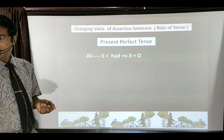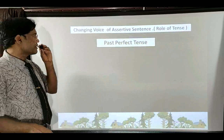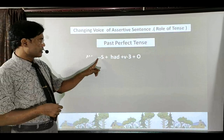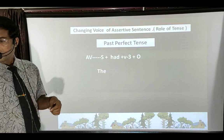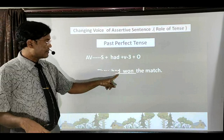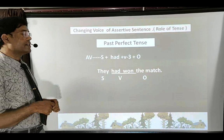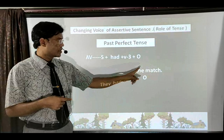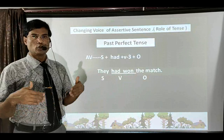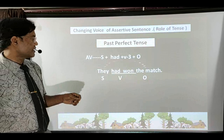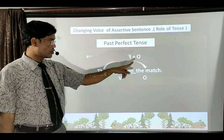Let us talk about Past Perfect Tense. In Past Perfect Tense, as tense changes the formula also changes. Active voice formula: Subject + had + third form of verb + Object. Example: 'They had won the match.' Identify: subject is 'they', verbal group is 'had won', object is 'the match'. When making passive voice, object and subject swap their places — if this replacement of subject and object doesn't happen, passive voice won't be formed.